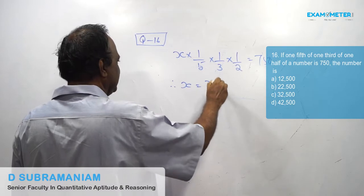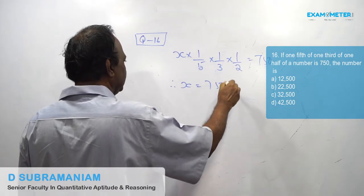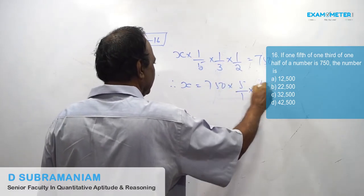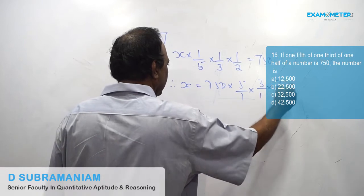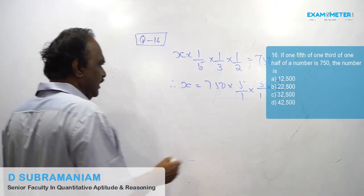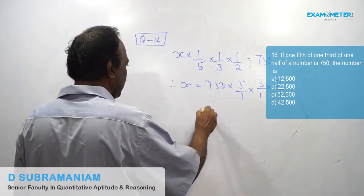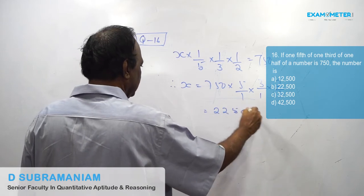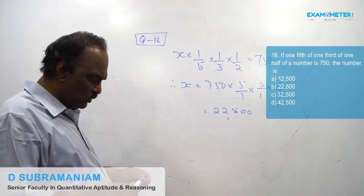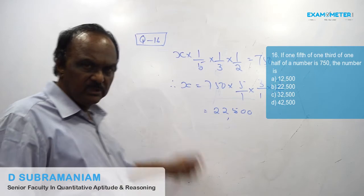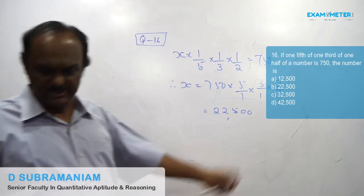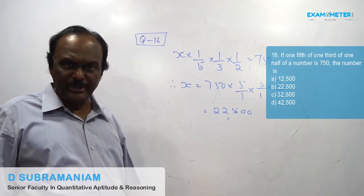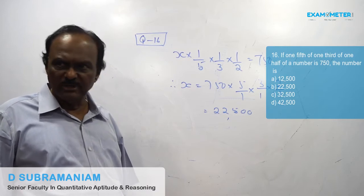Therefore, x is equal to 22,500. So the answer is B: 22,500.